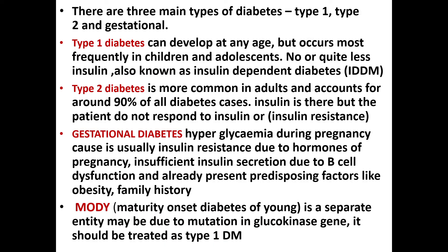There are three main types of diabetes: Type 1, Type 2, and gestational diabetes, along with MODY — maturity onset diabetes of the young. Type 1 diabetes is also known as insulin-dependent diabetes or juvenile diabetes. It can develop at any age but occurs most frequently in children and adolescents. In Type 1, insulin is absent or very low. It must be treated with insulin injections, not tablets.